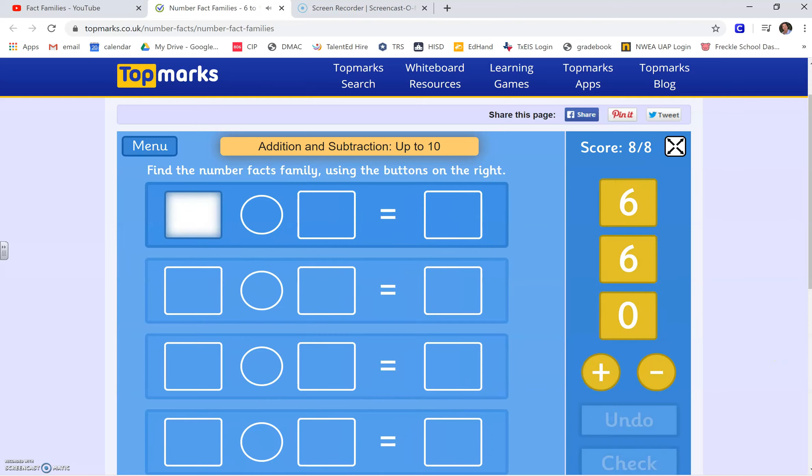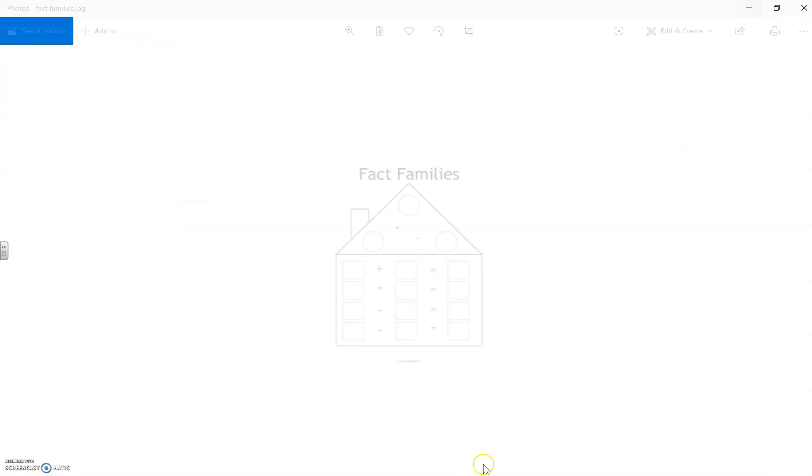So, guys, you can play this game at home. Last thing I want you to do is look at this fact family picture. And I want you to draw this picture. And then have your parents give you three numbers that are a fact family and you fill it in. I hope you enjoyed learning about fact families. I cannot wait to see pictures of your fact family houses. Bye, guys.